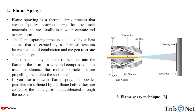Next — flame spray. Flame spraying is a thermal spray process that creates quality coatings using heat to melt materials that are usually in powder, ceramic rod, or wire form. The flame spraying process is fueled by a heat source created by a chemical reaction between a fuel of combustion and oxygen to create a stream of gas. The thermal spray material is then put into the flame in the form of a wire and compressed air is used to atomize the molten particles before propelling them onto the substrate. If you use a powder flame spray, the powder particles are softened by a flame before they are carried by the flame gases and accelerated through the nozzle.